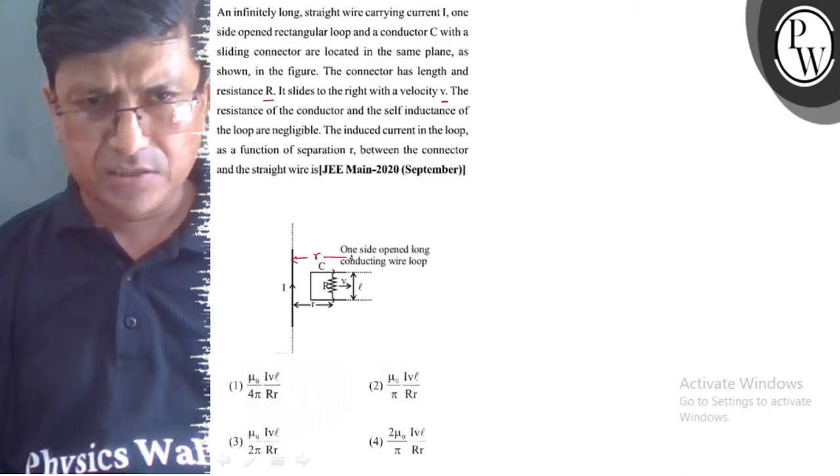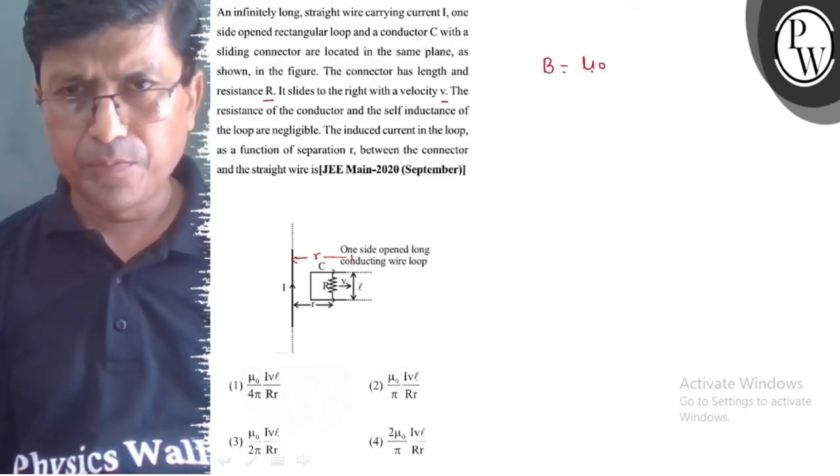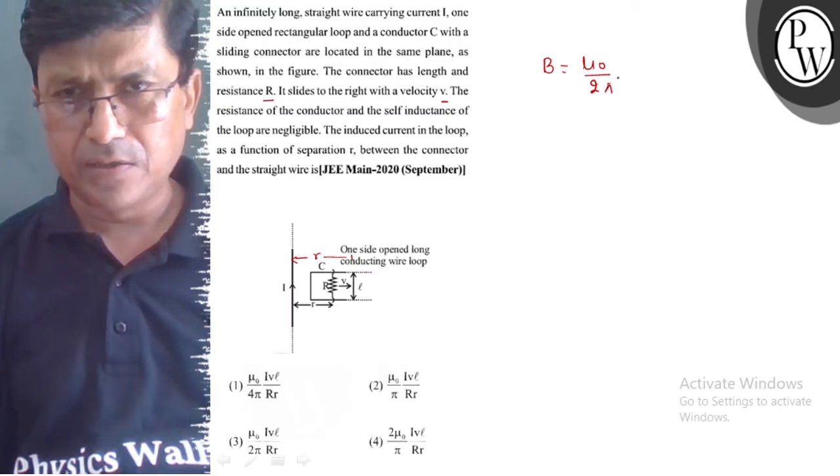The magnetic field at distance r is μ₀/2π times I/r.